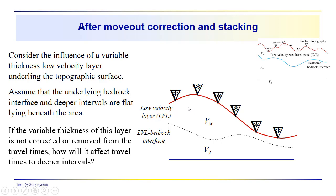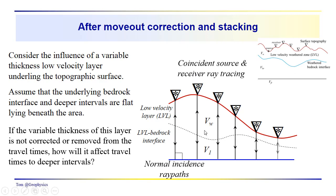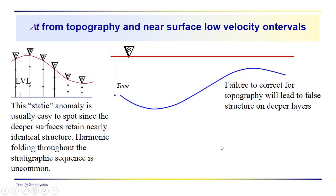And we realize that if we don't correct for the changes, let's say in topography or the varying thickness of this low velocity layer here, that we're going to get some anomalous travel times down to this flat reflector. It will no longer be flat. So we've got our coincident source and receiver ray tracing. We know that we're further away up here, we've got a thicker low velocity interval. What's the combined effect going to be on the travel times to this reflector?